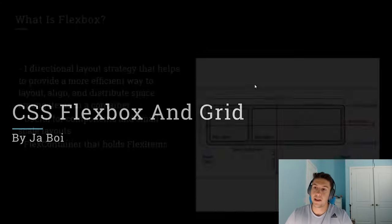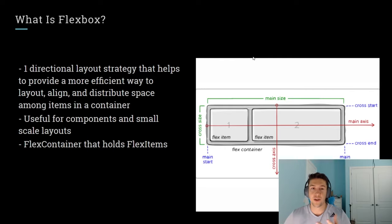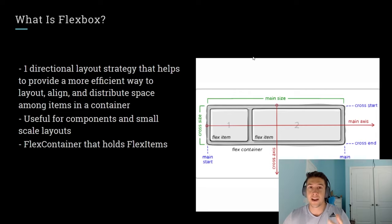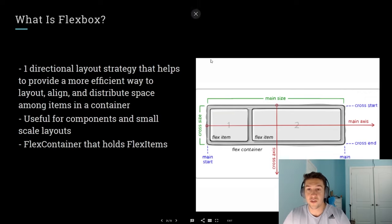So let's start out by looking at what Flexbox is. Essentially, Flexbox is a one-directional layout strategy that provides a more efficient way for you to lay out, align, and distribute different types of elements within a container. You can put different items and align them — like say you want two words next to each other — and it makes it easier to space them out, give them padding, margin, or even order them separately. It's really useful for smaller components or small-scale layouts.